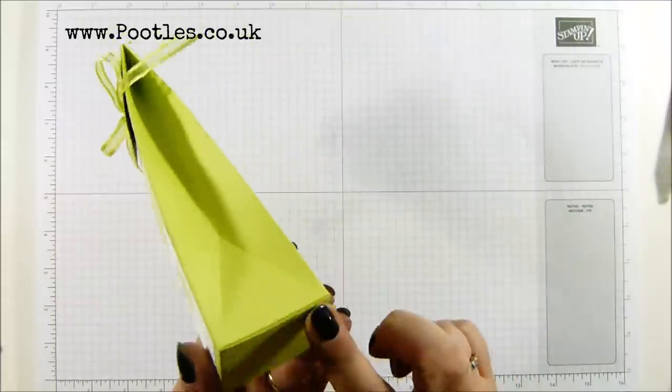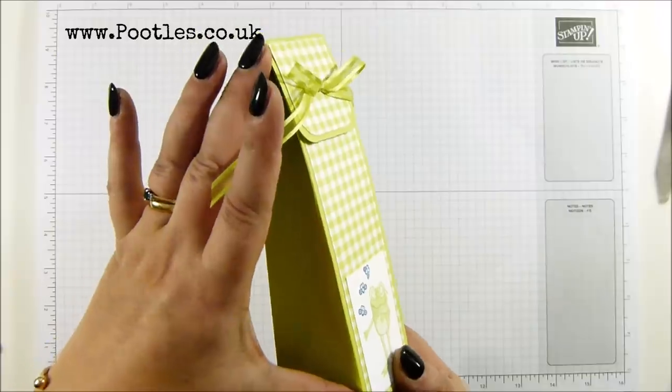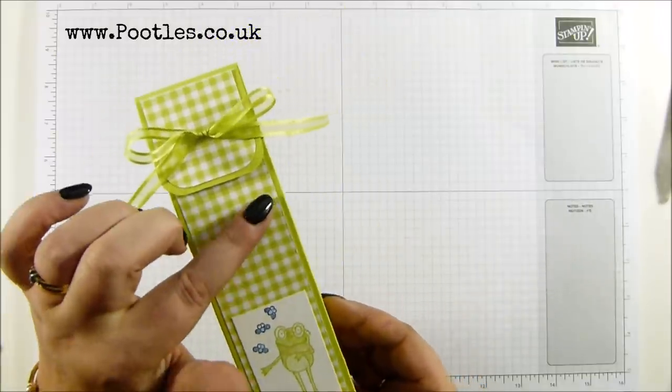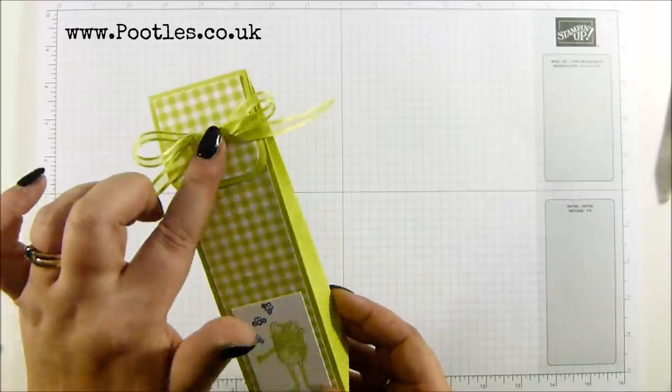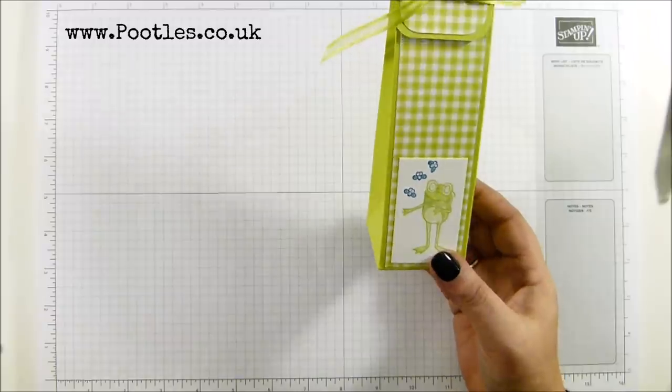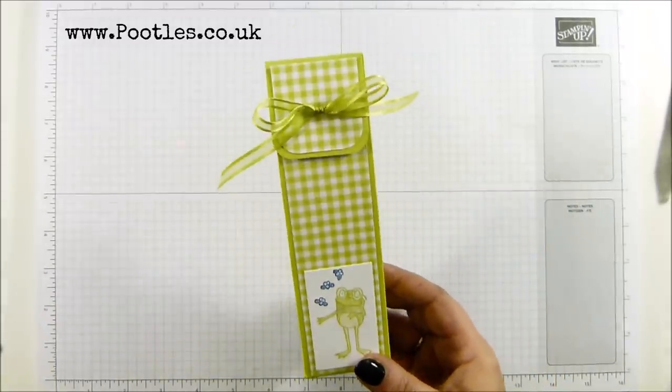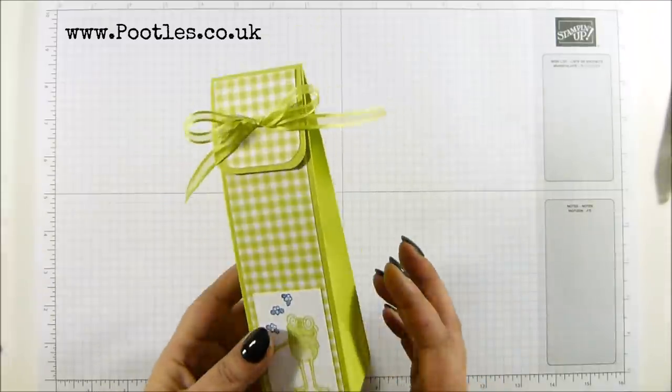So I've got this lovely two by two inch, five by five centimeter box, seven inches tall, 17 and a half centimeters tall. It's got the Gingham Gala Designer Series paper and the free So Hoppy Together stamp set and free Organza Organdy ribbon. It's a lovely, lovely box and I'm going to show you how to make it. So easy.